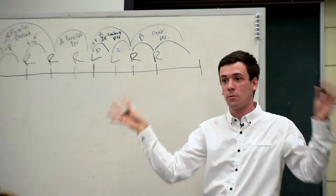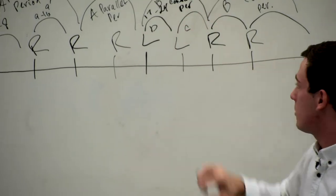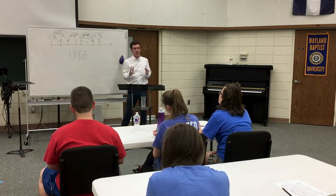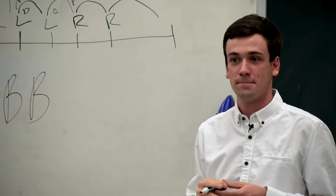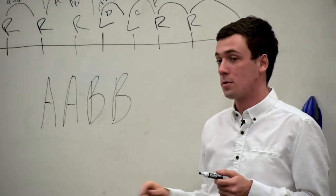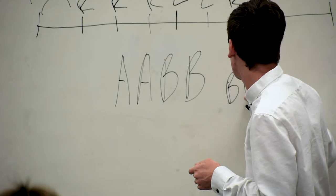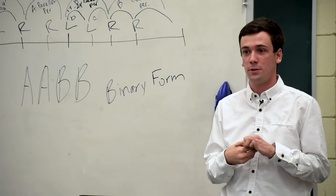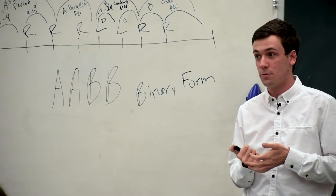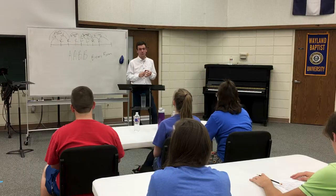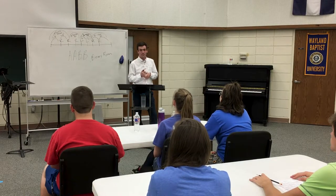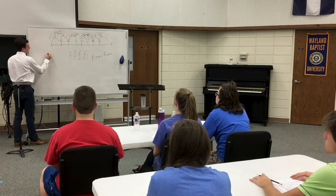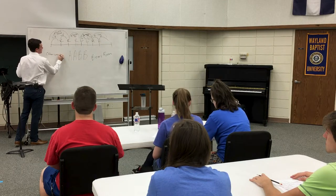So now looking at the overall form of the piece, we see that we have a form consisting of A, A, B, B. Does anybody have any clue what we would call this form? This form is a large form called binary form. Form is something that composers use whenever they're composing their music. Does anybody have any clue why they would use form when composing? So other composers can copy other composers.